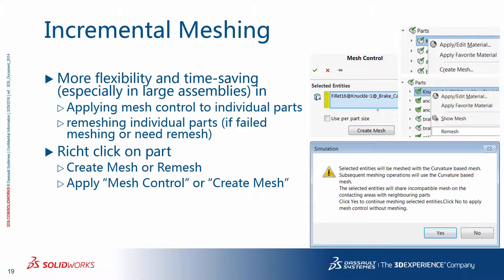To use incremental meshing, right-click on the part, select 'create mesh' or 'remesh,' and then either apply mesh control or create a mesh for the part. When you try to mesh or remesh, you will get a warning message that the selected entities will be meshed with the curvature-based mesh and subsequent meshing operations will also use the curvature-based mesh. In addition, the selected entities will share incompatible mesh on their contacting areas with neighboring parts. Basically, incremental meshing gives you greater flexibility and time saving at the expense of using an incompatible mesh.